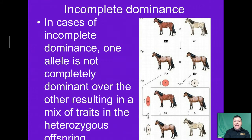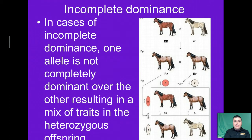The first one that we'll look at is incomplete dominance. In cases of incomplete dominance, one allele is not completely dominant over the other, and you end up getting sort of a mix of traits in the heterozygote individual. The dominance is incomplete — one allele doesn't completely dominate the other.